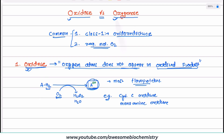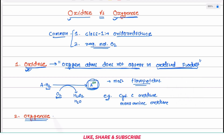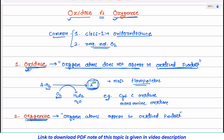Now let us look at the oxygenase. Oxygenase is different from oxidase in that oxygen atoms DO appear in the oxidized product. In the case of oxidase, oxygen atoms do not appear in the oxidized product, whereas in the case of oxygenase, oxygen atoms appear in the oxidized product. This is the primary difference between oxidase and oxygenase.